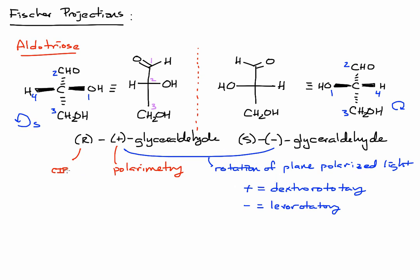So plus is equal to dextrorotatory, minus is equal to levorotatory. So also keep in mind that the CIP designation, R, has no physical relationship to the polarimetry sign.